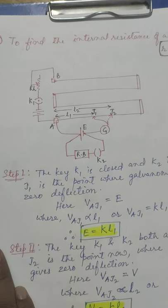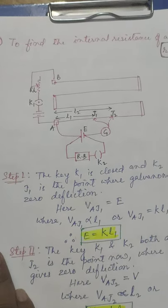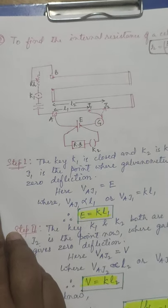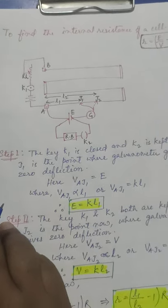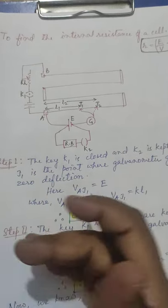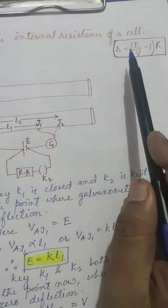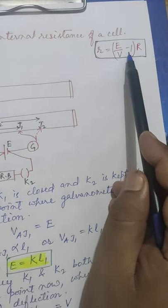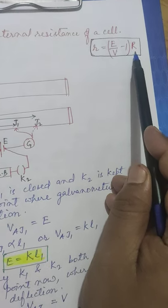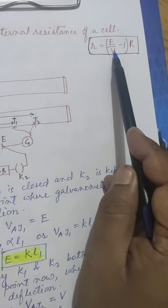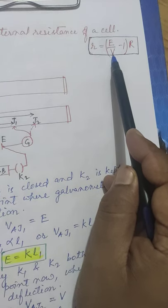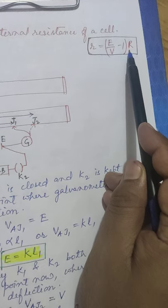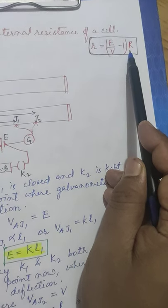We are now going to discuss the second application of the potentiometer, which is to find the internal resistance of a given cell. The formula for the internal resistance of a cell is given by r = (E/V − 1) × R, where E is the EMF, V is the terminal potential difference across the cell, and R is the external resistance associated with the cell.